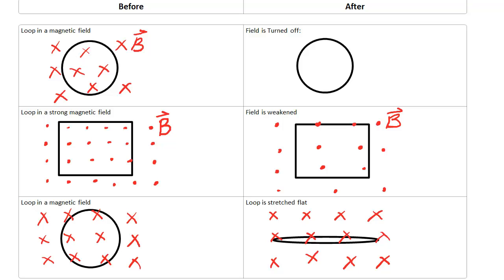Now remember with Lenz's Law, the important concept is that it wants to stay in its original configuration. It doesn't want to change. So its original configuration was capturing X's. In the after loop, it's going to generate a current to put the X's back. All we're concerned with is inside the loop. So to put the X's back, which way is the current going to flow?